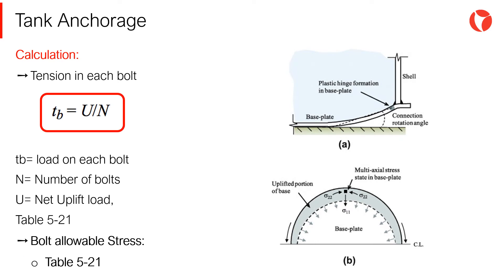According to section 5.12 of the code, tension in each bolt is calculated according to the equation displayed on screen. Where TB is the load on each bolt, N is the number of bolts, and U is the net lifting load, per table 521A of the code.